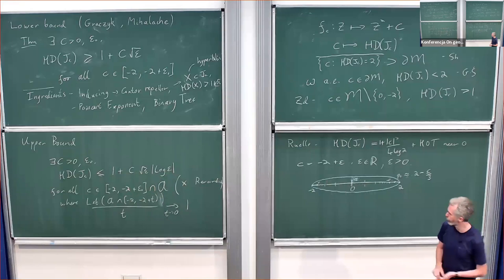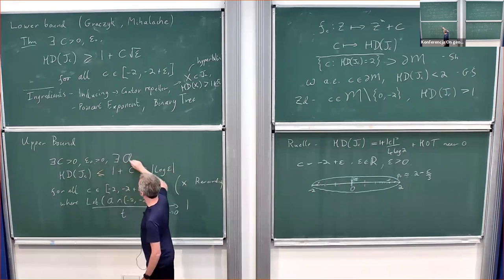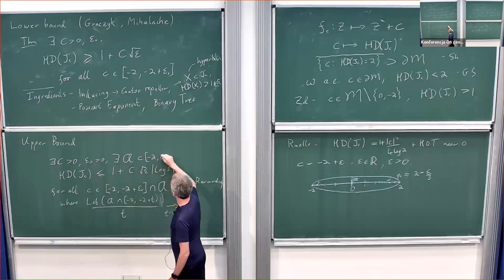So there exist two constants and a parameter set A, a subset of (minus two, zero), and once we have this parameter set then we can call it a theorem.